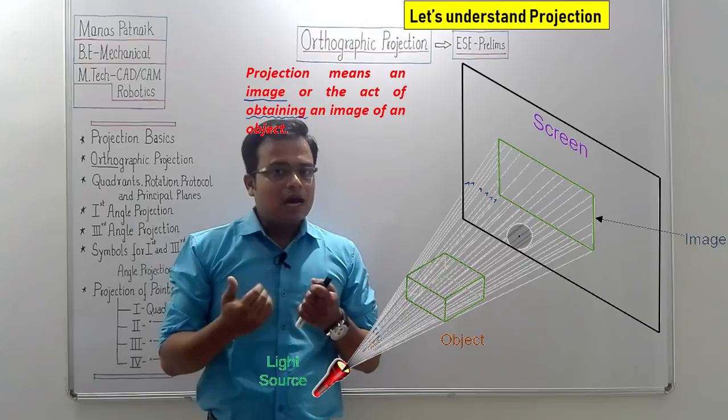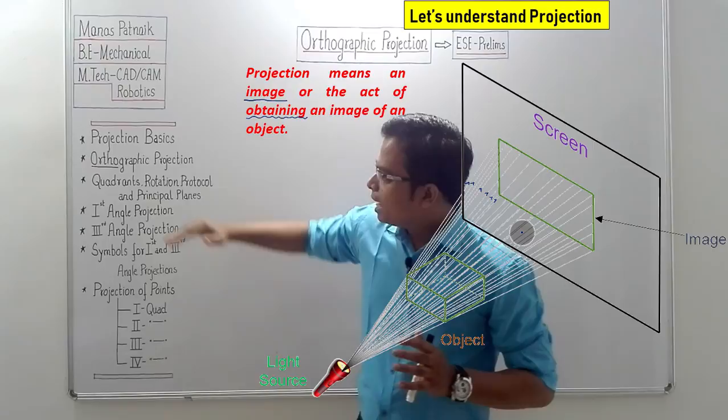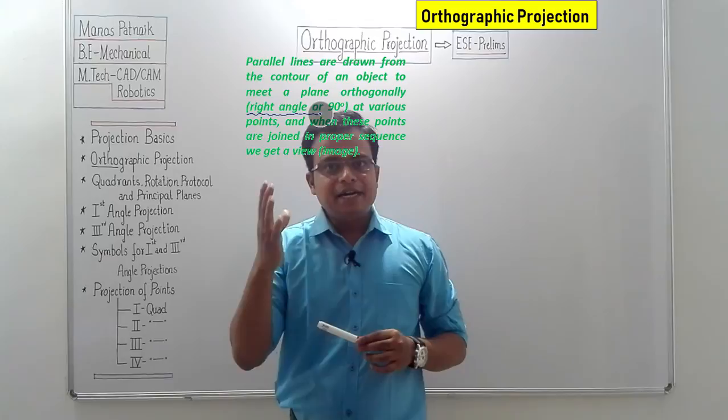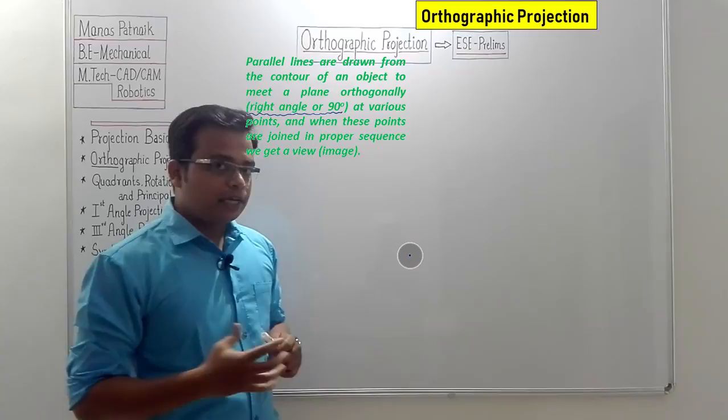So what we need is a rule that allows us to obtain the true shape and size of any object. That tool has been framed for orthographic projection. Now, take a look at this — 'ortho' is a Greek word and it means at right angles, or at an angle of 90 degrees.